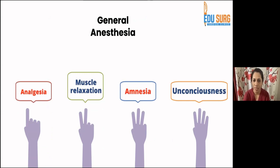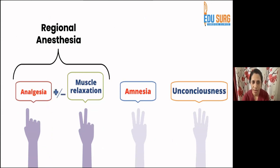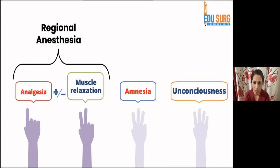On the other hand, regional anesthesia includes only two components: analgesia, with or without muscle relaxation. The muscle relaxation component is dependent on the concentration and volume of drug used. If you use a diluted concentration, it provides only analgesia.